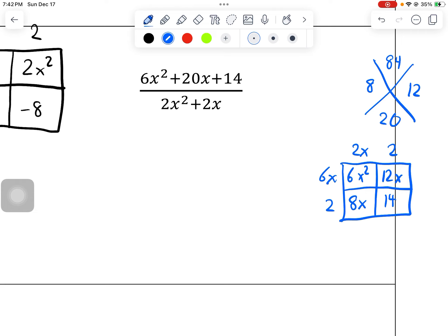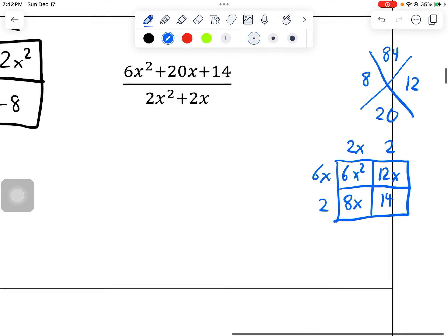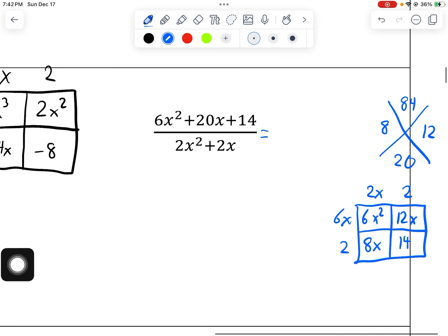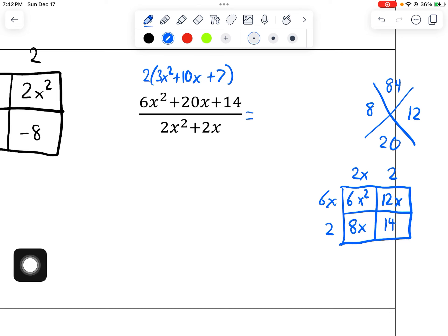Something doesn't seem right though. Should be able to take a bigger factor out of those. Oh, okay. So I didn't take out the greatest common factor. And I knew that because when I took 2 times 2, that doesn't make 14. So I should have factored out a 2 right away. I'd be left with 3x squared plus 10x plus 7. That's why it's good to double check your work.